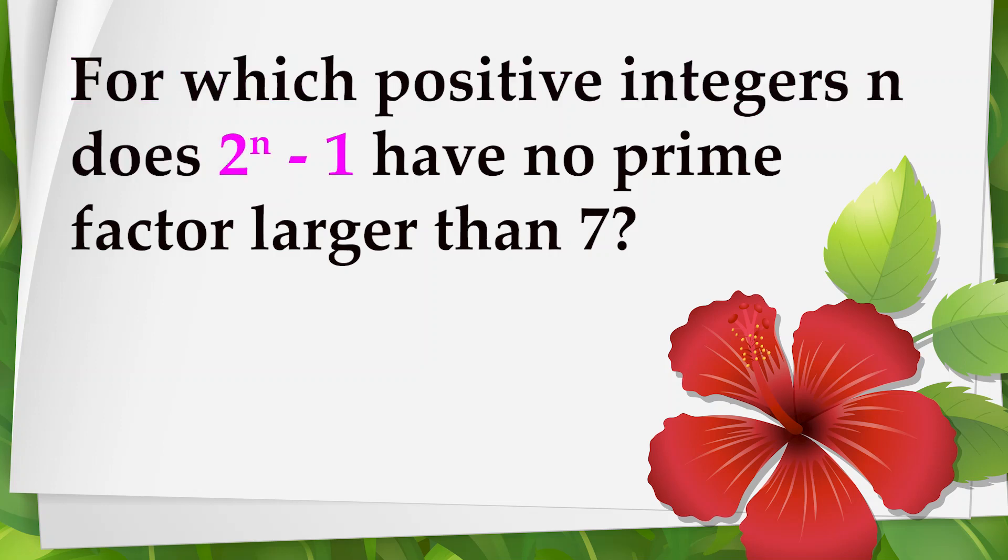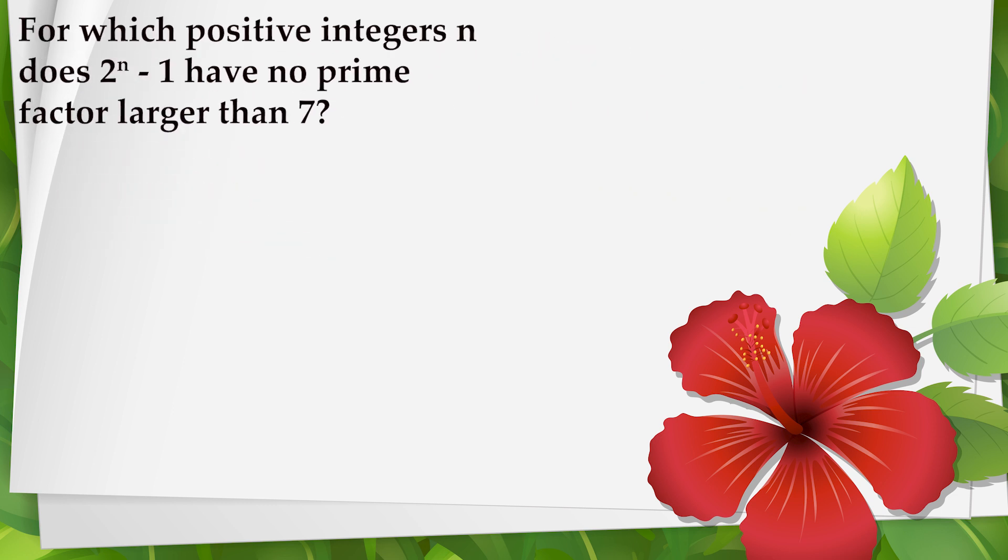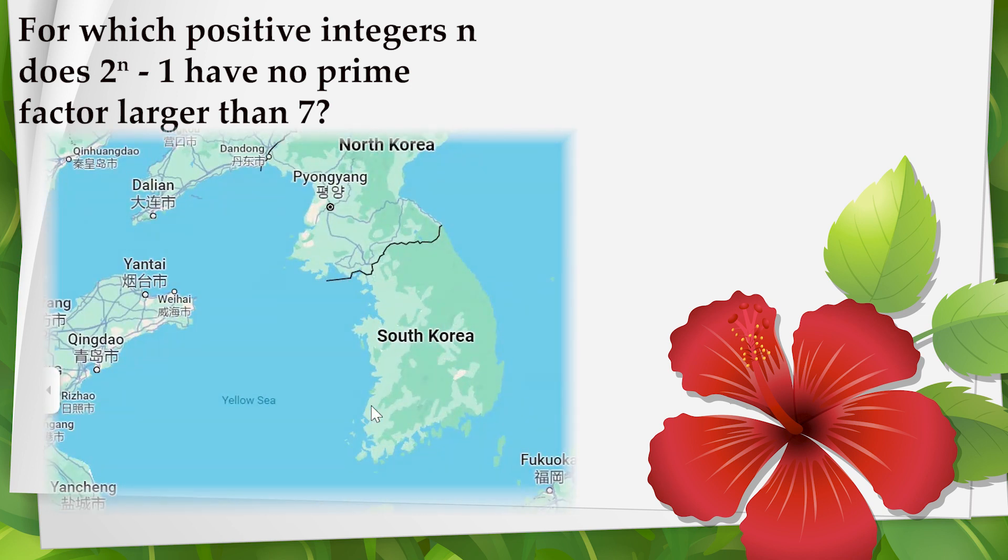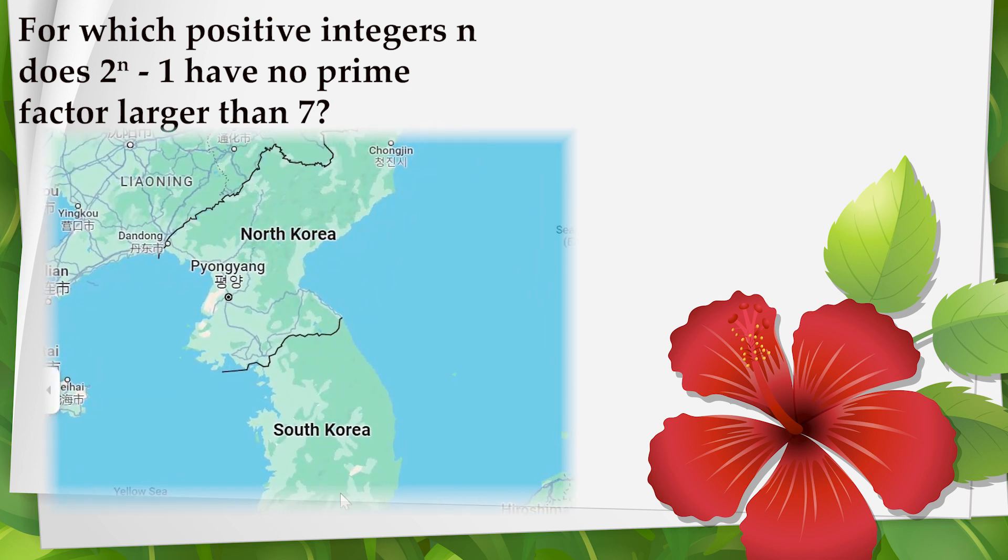For which positive integers n does 2 to the n minus 1 have no prime factor larger than 7? This problem appeared in the 2023 Korean Mathematical Olympiad, that's South Korea, just in case you were wondering.